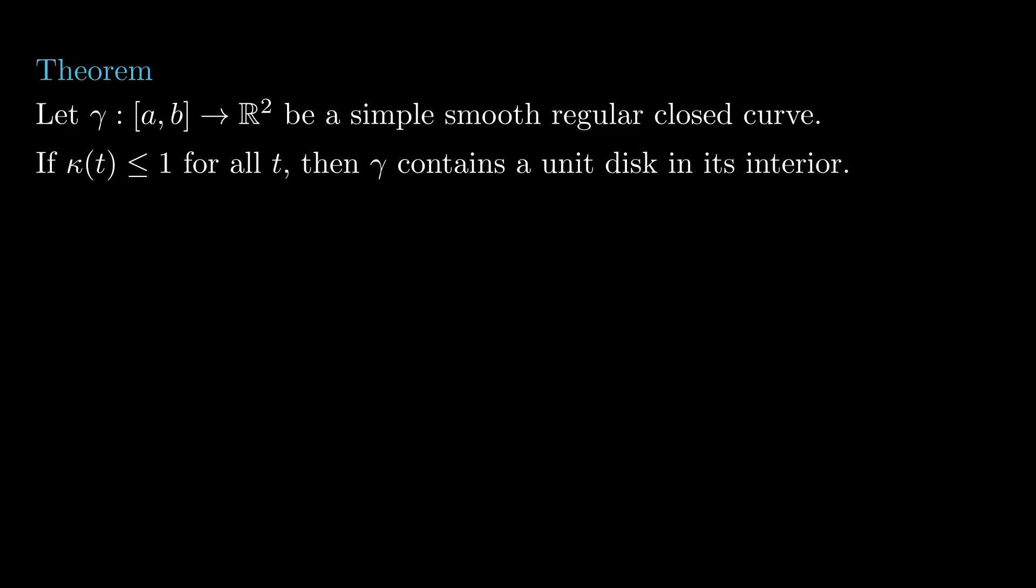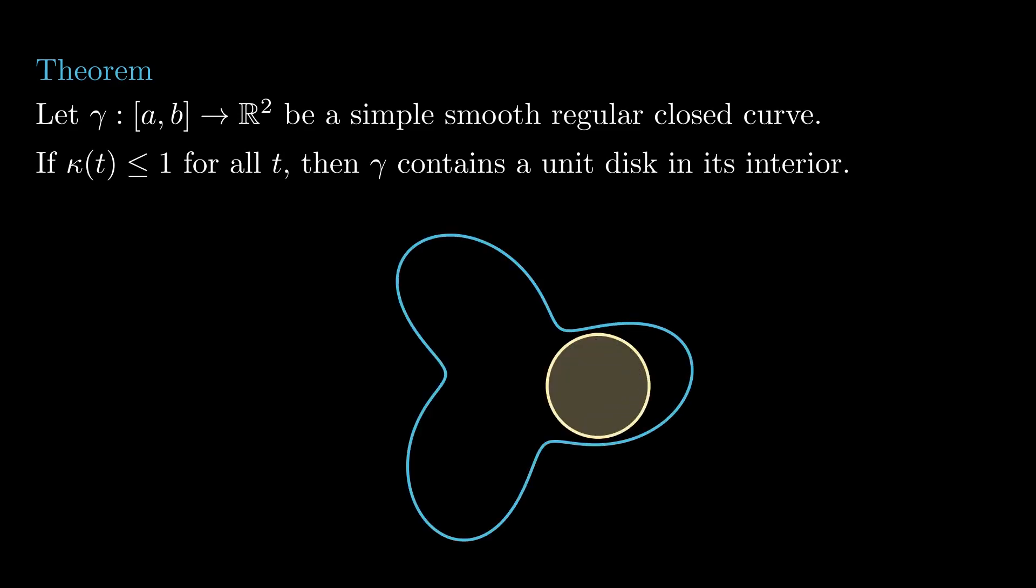The theorem goes as follows. If we have a simple closed smooth regular curve in the plane, and its absolute curvature is at most one at each point, then it contains a unit disk somewhere in its interior.